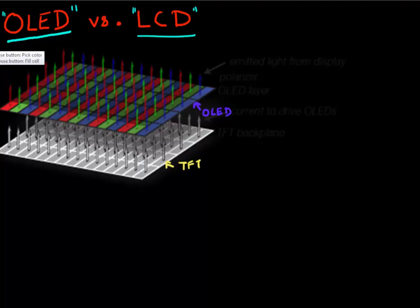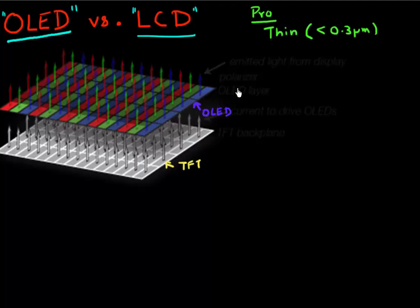Let's start with areas where the OLED fares better compared to LCD. One thing about OLEDs is that you can make them very thin — less than 0.3 microns, or less than 300 nanometers in thickness. Because they essentially only have these two layers, you can lay these layers on a flexible substrate. That's another advantage: you can make OLED-based displays on flexible substrates, and there are always sci-fi applications like making newspapers out of OLED-based displays.